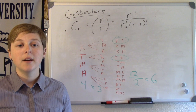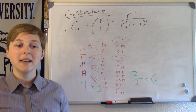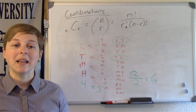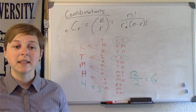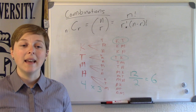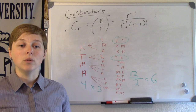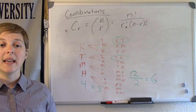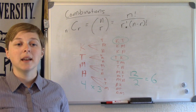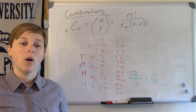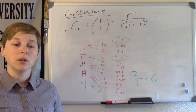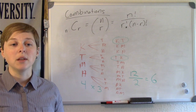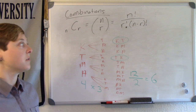The number of distinct objects, or the number of distinct friends, is n equals 4, and we are taking two of them at a time, so r equals 2. We could have solved this problem using the combination formula.